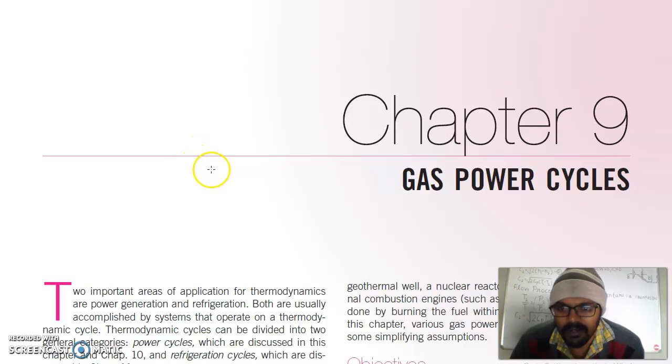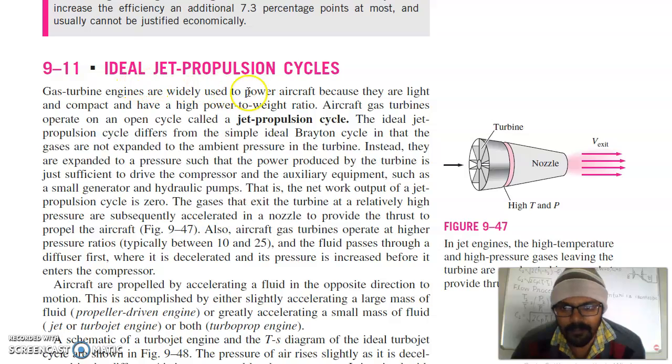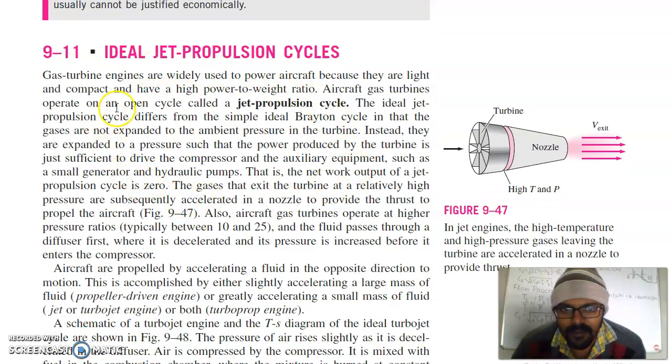Good morning, today we will start with gas power cycles. We will start with ideal jet propulsion cycle. Gas turbine engines are widely used to power aircraft because they are light and compact and have a high power to weight ratio. Aircraft gas turbines operate on an open cycle called jet propulsion cycle.